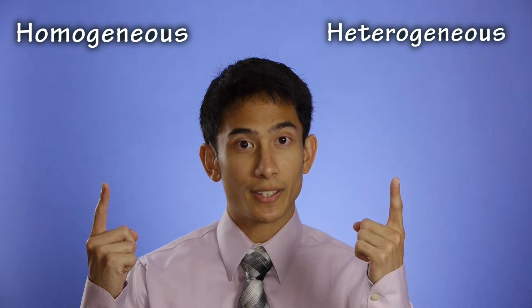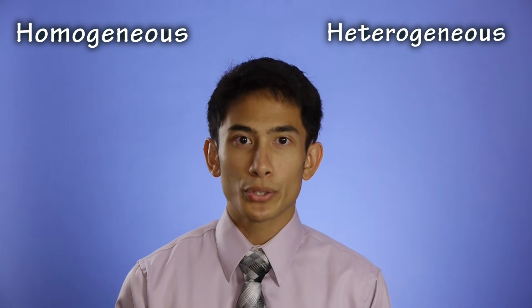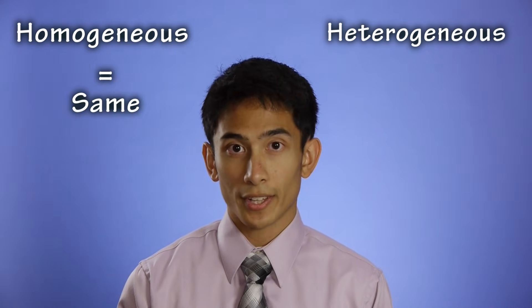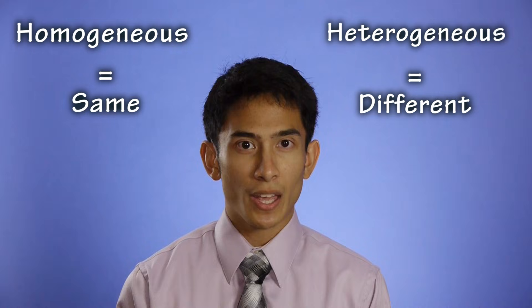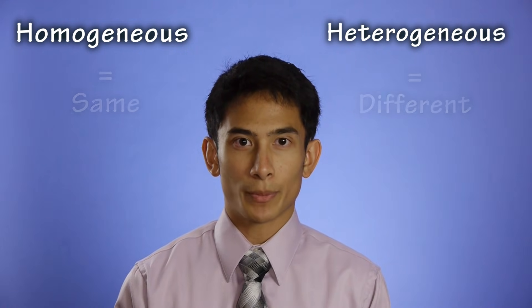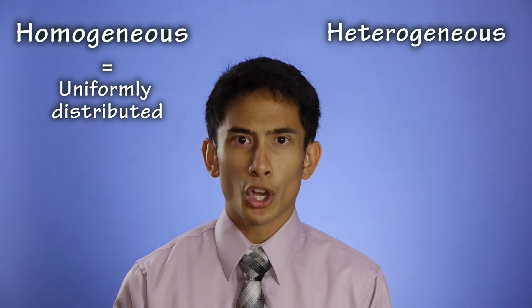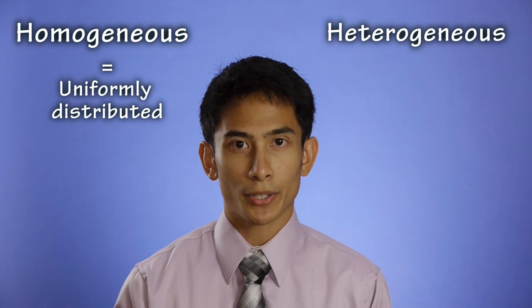There are two kinds of mixtures, homogeneous and heterogeneous. These names are based on the Greek root words: homo, meaning same, and heteros, meaning different. The components of homogeneous mixtures are uniformly distributed, whereas the components of heterogeneous mixtures are not.